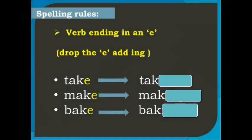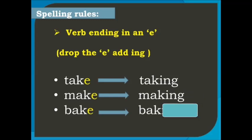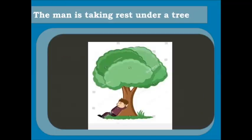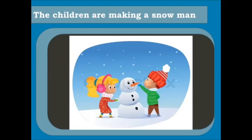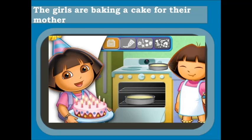However, when the verb ends with a silent e, drop the e and add ing. For example: take → taking, make → making, bake → baking. For example: The man is taking rest under a tree. The children are making a snowman. The girls are making a cake for their mother.